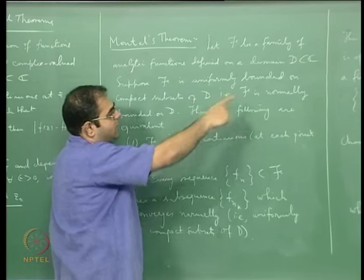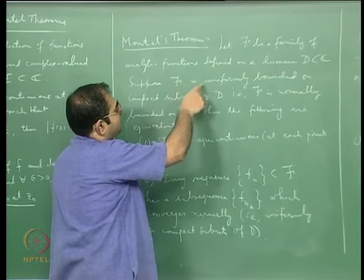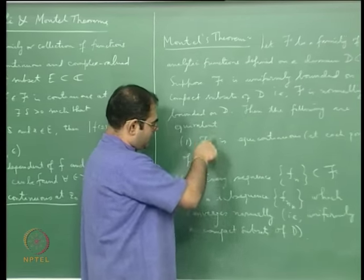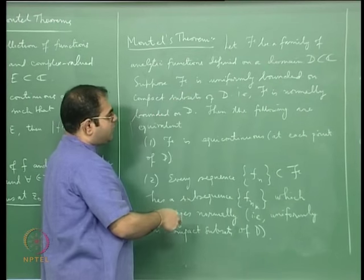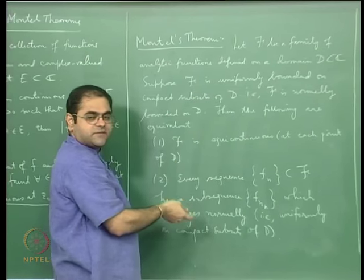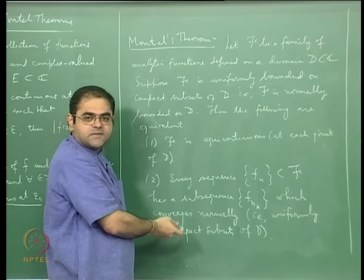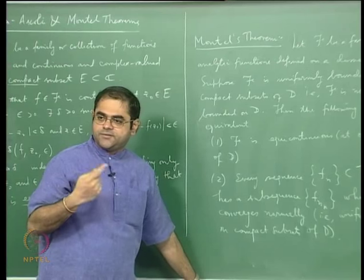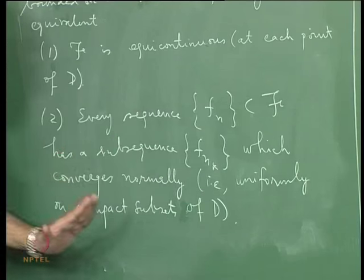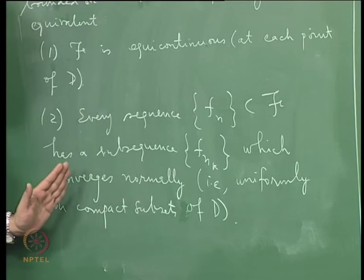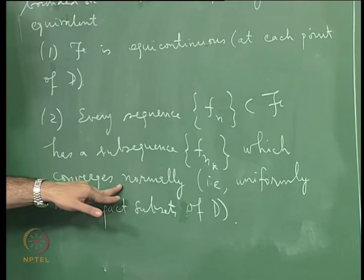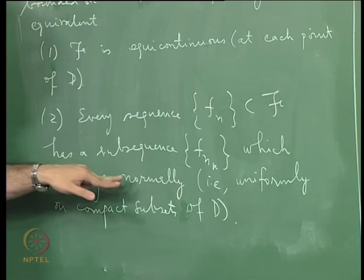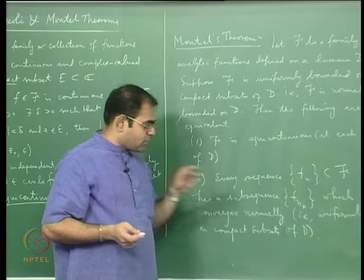Now the compact set is replaced by a domain, therefore the condition of uniform boundedness is restricted only to compact subsets of the domain. When you have uniform boundedness the Arzelà-Ascoli philosophy is that equicontinuity is the same as the existence of a subsequence that converges uniformly. The equicontinuity condition remains as it is, but the existence of a subsequence which converges uniformly — that also you should expect only on compact subsets. That is why we say that for every sequence you get a subsequence that converges normally.